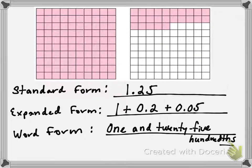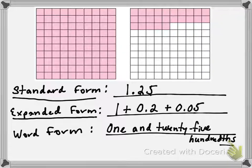So, here's a grid that represents a decimal. The standard form for this grid is 1.25, one and twenty-five hundredths. The expanded form representation is 1 + 0.2 + 0.05. The word form would be one and twenty-five hundredths.